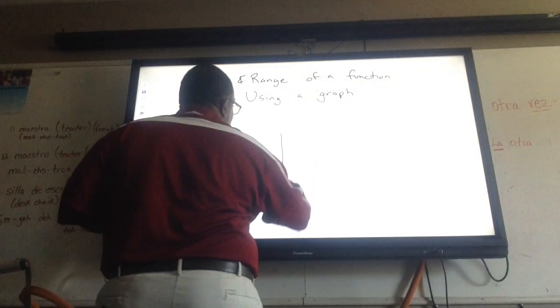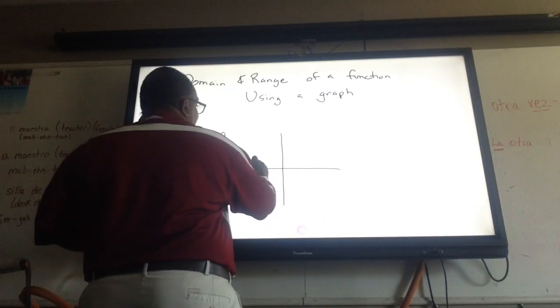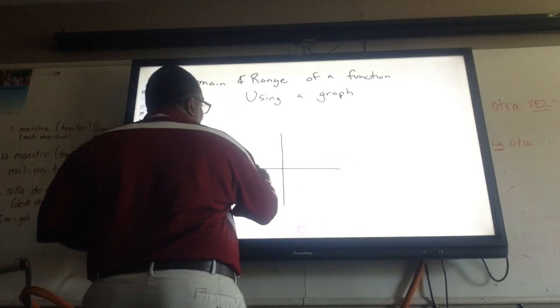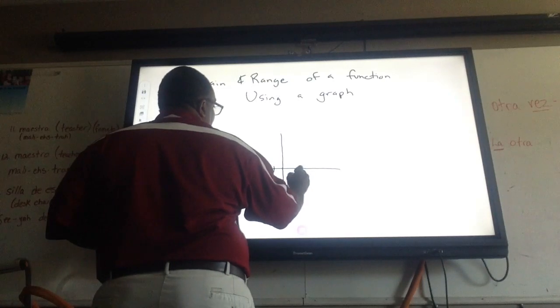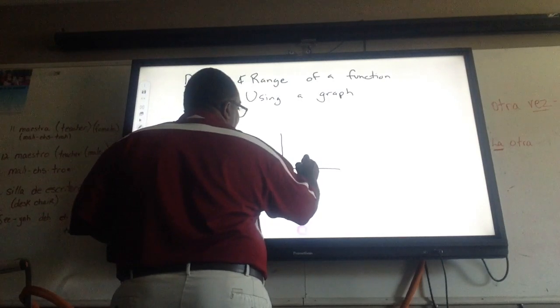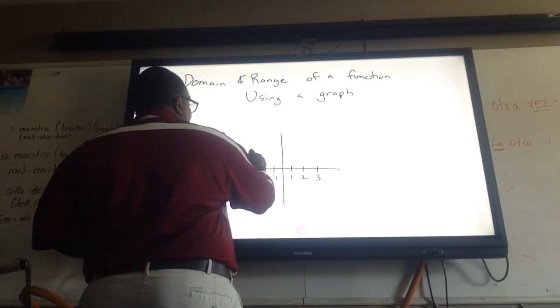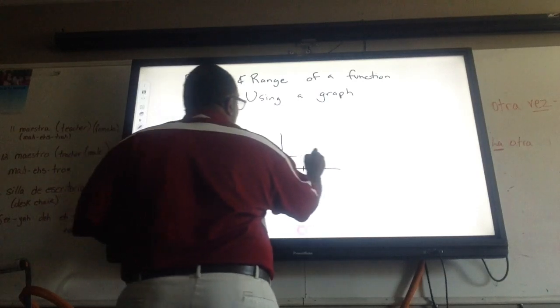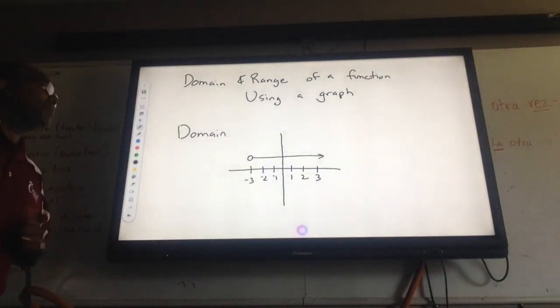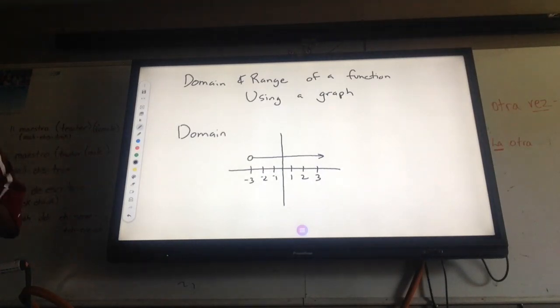For instance, let's say this is my graph, and we're going to say this is negative 3. Now, I'm only looking at domain right now. And let's say at negative 3, I have an open circle that goes that way. So my domain, I want to identify my domain. My domain of this function would be, where does it actually start? Negative 3, but is negative 3 included? No, it is not.